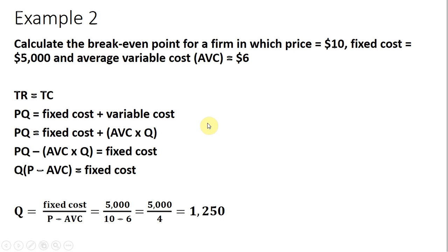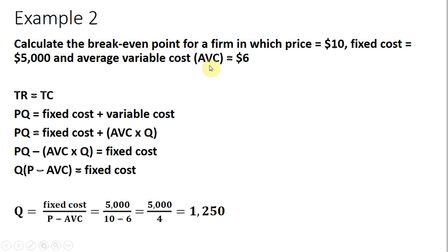Example 2 is slightly more complicated. Here we're going to calculate the break-even point given the following information: the firm sells its product at $10, the firm has fixed cost of $5,000, and the firm has average variable cost that is constant at $6.